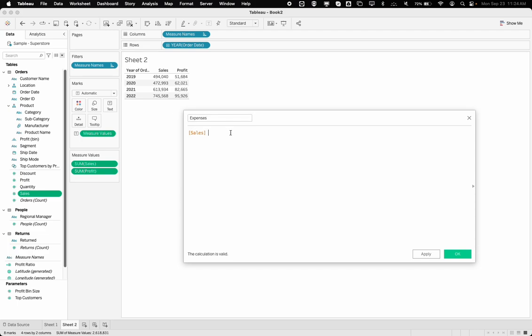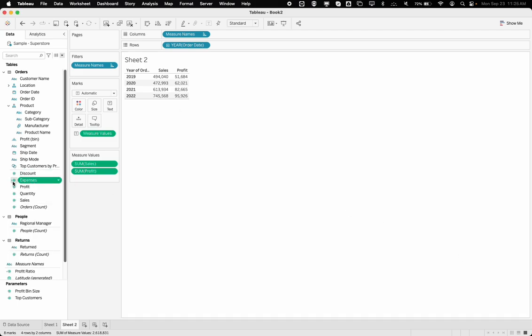Well, it's going to be, I know what my profit is, I know what my sales are. So if I take my sales and subtract profit, that should get me my expenses.